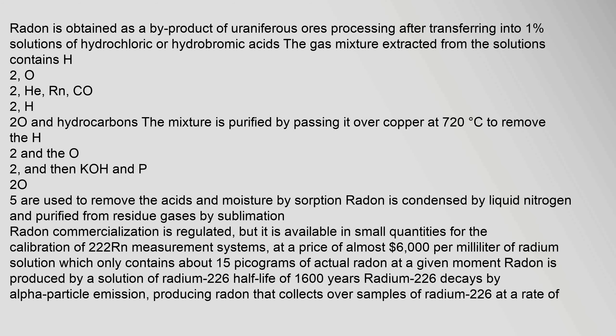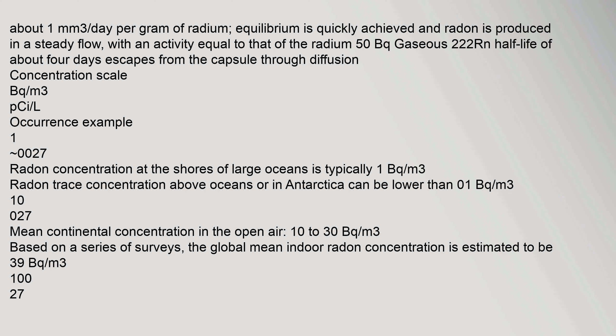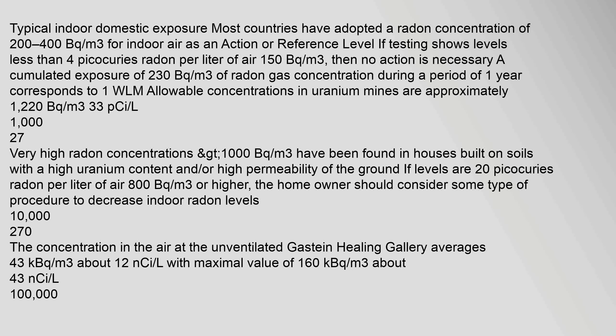Industrial production: Radon is obtained as a byproduct of uraniferous ore processing. After transferring into one percent solutions of hydrochloric or hydrobromic acids, the gas mixture extracted from the solutions contains H₂O₂, He, Rn, CO₂, H₂O, and hydrocarbons. The mixture is purified by passing it over copper at 720°C.